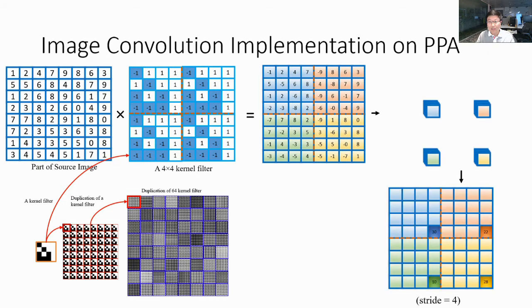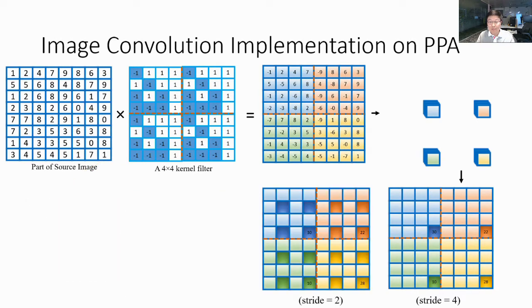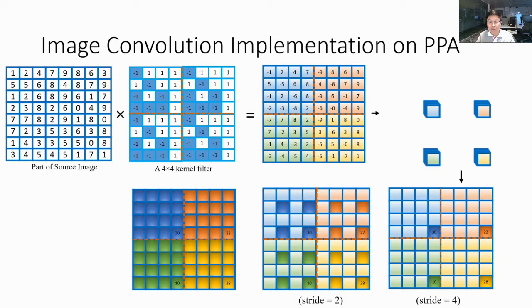As we can see, this is the convolution result with stride 4. Convolutions with stride 2 and 1 can be calculated by simply repeating this process for 4 and 16 times respectively.